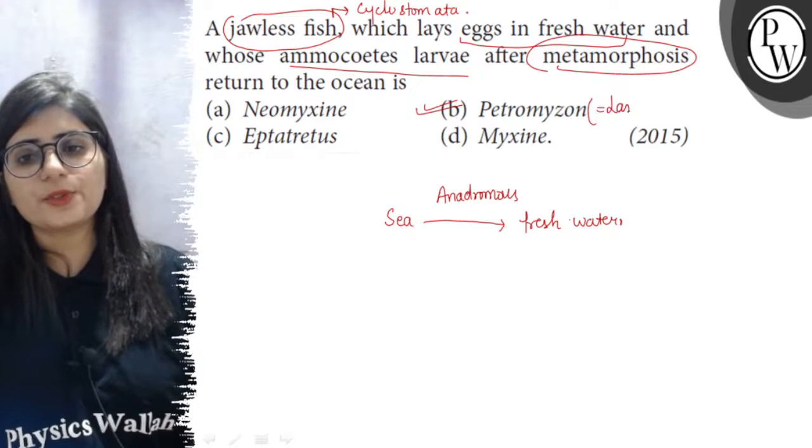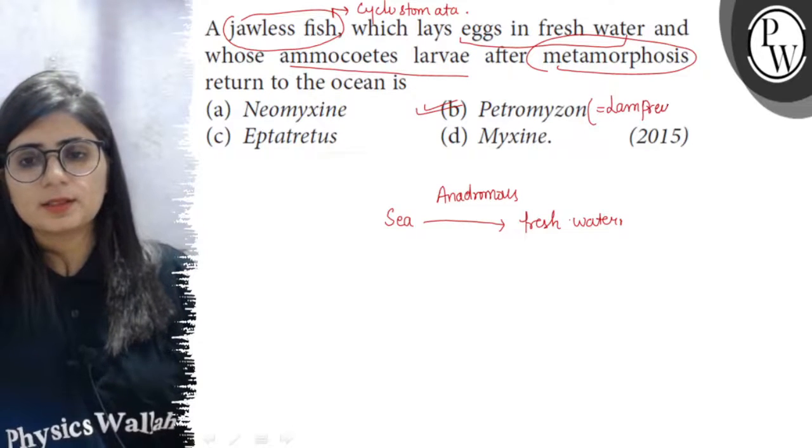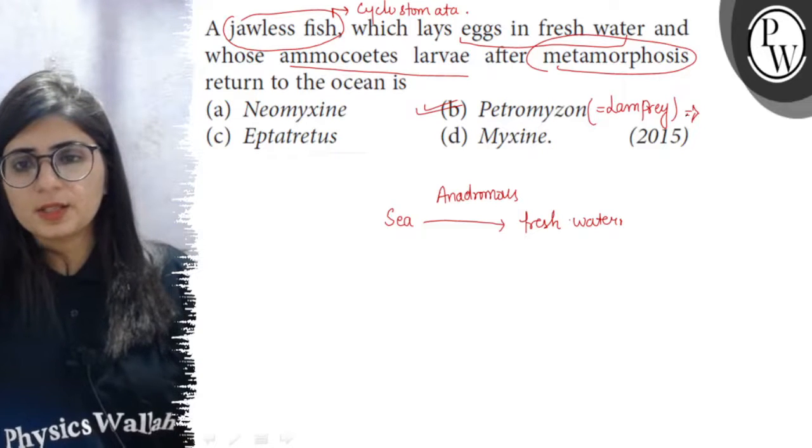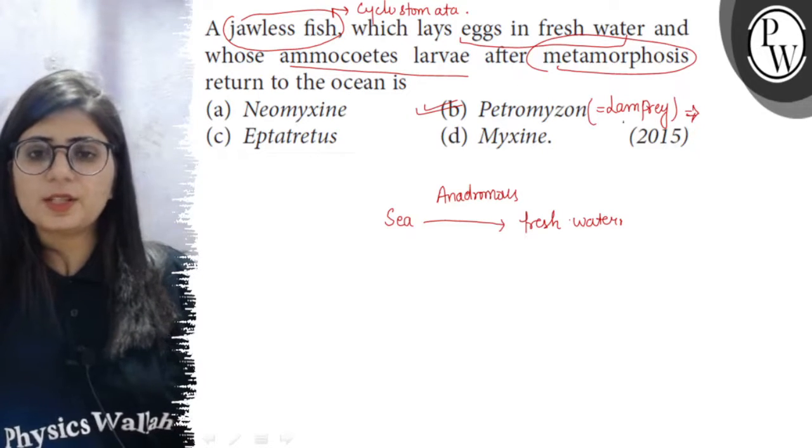Petromyzon is also known as the Lamprey. It is a Cyclostome, it means it is a jawless fish. It lives in oceans but it migrates to fresh water for spawning.